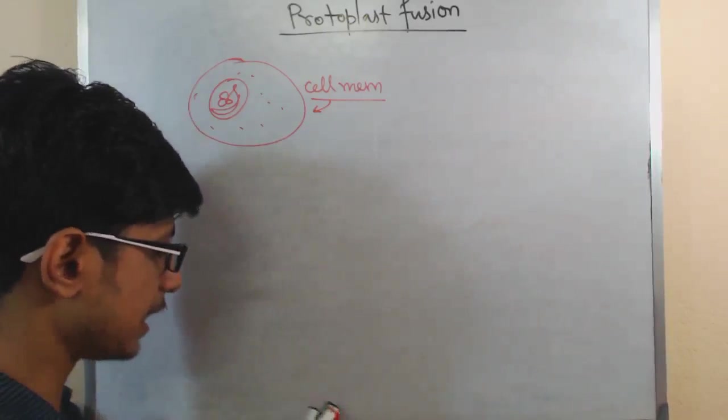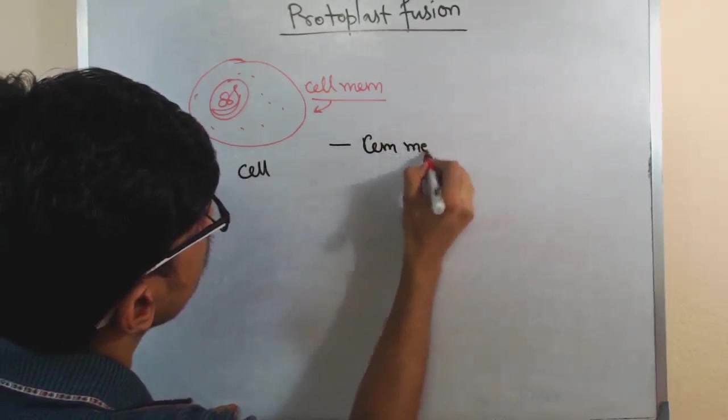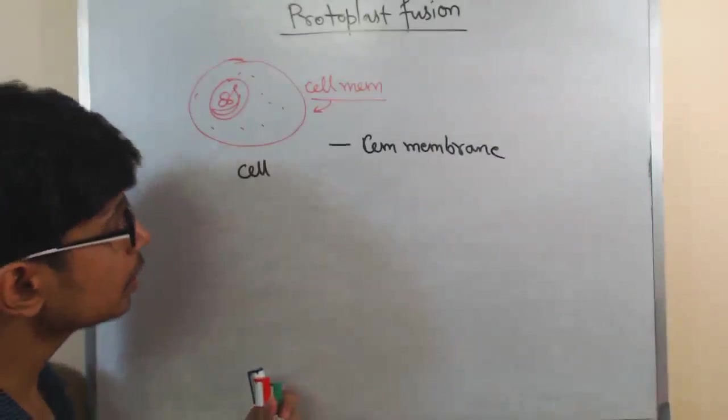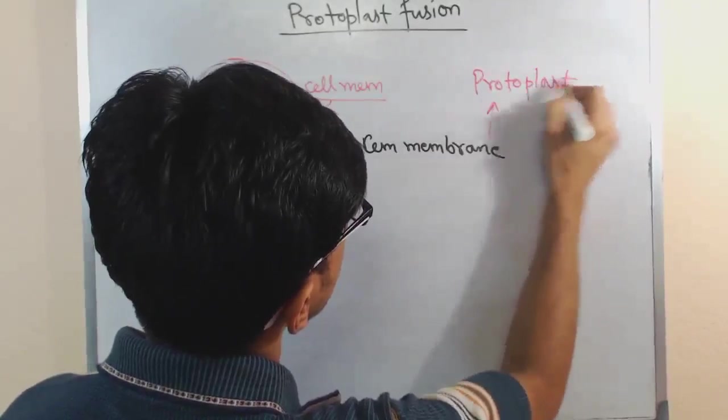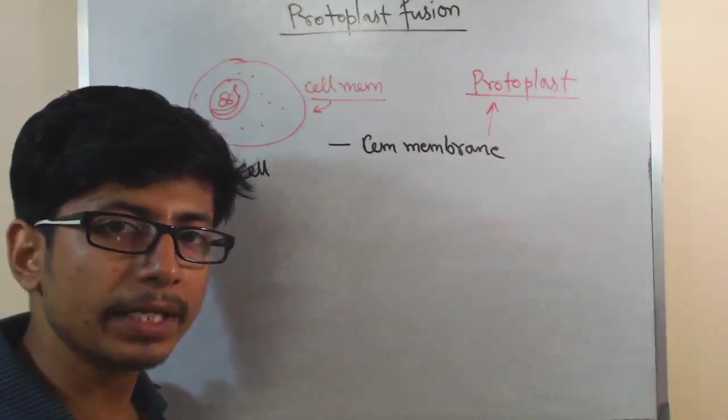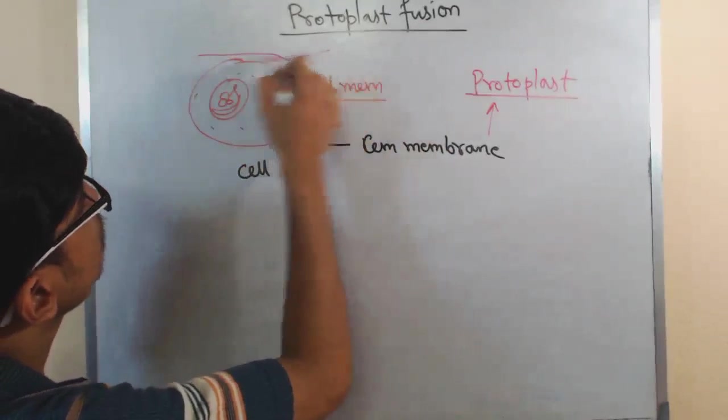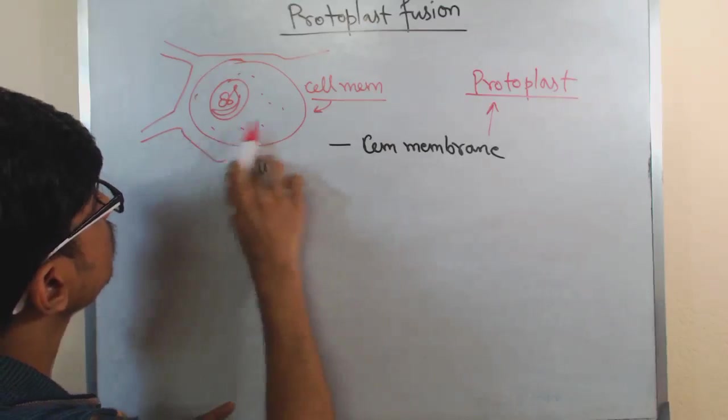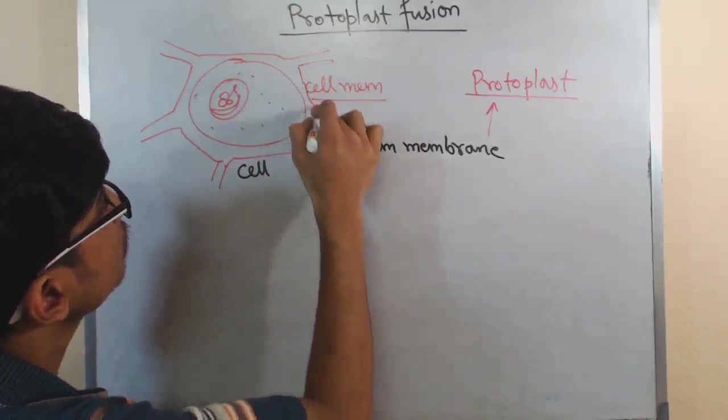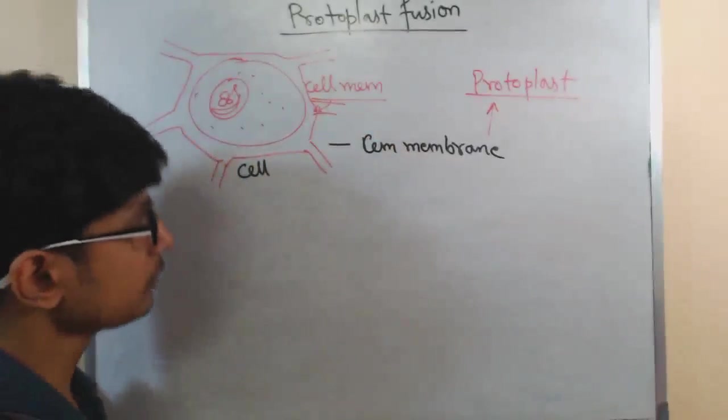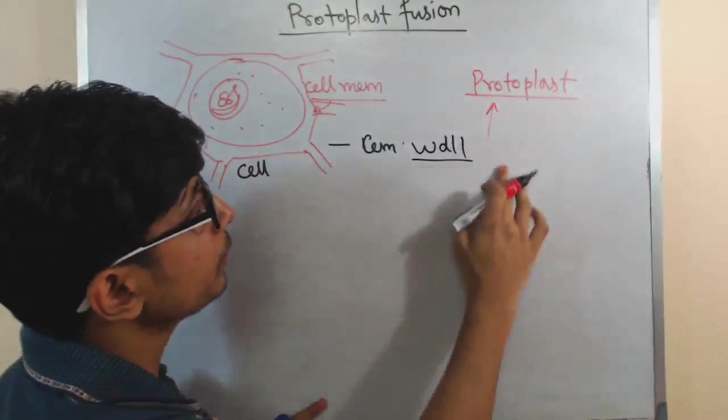So let's say this is a cell. If we just take cell membrane out of the picture, cell minus cell membrane equals protoplast. Or cell minus cell wall majorly, because if we're talking about the plant cell, we have cell wall structures. Simply we can say cell minus cell wall, whatever thing we left with is called protoplast.